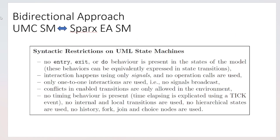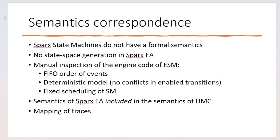In this paper we propose a bidirectional translation approach: models can be translated backward and forward between UMC and SPARX EA, once certain syntactic restrictions are in place in SPARX EA. Most restrictions are only syntactic sugar and are important to disambiguate semantics aspects of UML left open by the standard. Other restrictions are more stringent — for example, the transitions of a SPARX EA state machine may contain source code, but we restrict effects to arithmetic operations on attributes of the state machine.